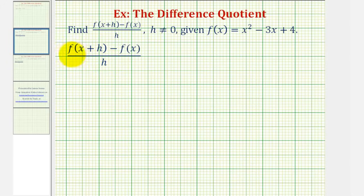So to start, we want to find f of the quantity x plus h, which means the quantity x plus h is the input into the given function, so wherever we see x, we'll replace x with the quantity x plus h. So if f of x equals x squared minus three x plus four, f of the quantity x plus h would be, instead of x squared, x plus h squared.